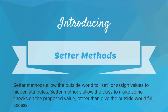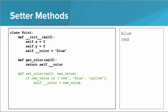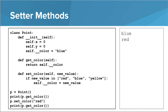Now, what about changing the value? Introducing setter methods. Setter methods allow the outside world to set or assign values to hidden attributes. They allow the class to put some sanity checks on the value getting set, rather than giving the outside world full-fledged access. For example, if we want to let the outside world change the color but only to red, blue, or yellow, we can write a setter method that takes the proposed new value and only makes the change if it's red, blue, or yellow. If code outside the class tries to change the color to red, it'll work. If it tries to change it to orange, the check will prevent it and the color will remain blue.